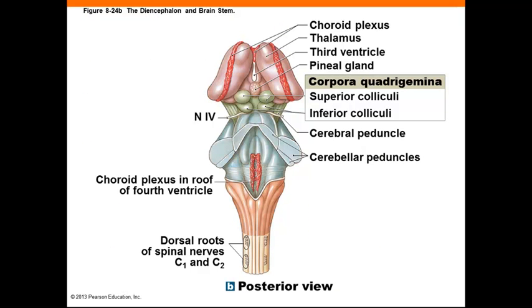This is a nice view of the choroid plexus — you can see that red ribbon right at the top. You can also see the right and left thalamus and the pineal gland. This figure also shows the structure of the midbrain very well. You can see there are two pairs of nuclei involved in visual and auditory processing, the superior and inferior colliculi.